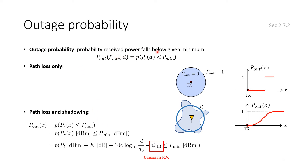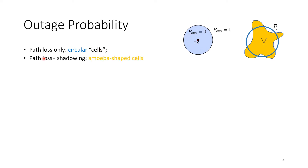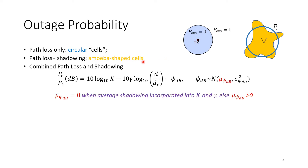To summarize: outage probability considering path loss only is deterministic — a step function. If we consider path loss and shadowing, it's no longer a step function. With path loss only, the coverage region is circular. With path loss and shadowing, it's an irregular shape — like a bacteria shape. For the path loss only case, knowing the distance tells you immediately whether you have coverage or not.